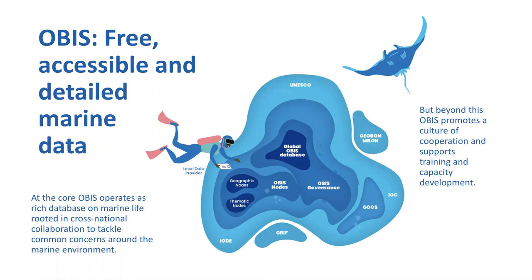OBIS operates as a collaborative network of regional and thematic nodes, and the global OBIS network promotes a culture of cooperation and supports training and capacity development, while also maintaining partnerships around the globe with organizations such as the Marine Biodiversity Observation Network, or MBON, the Global Ocean Observing System, or GOOS, and the Global Biodiversity Information Facility, or GBIF.